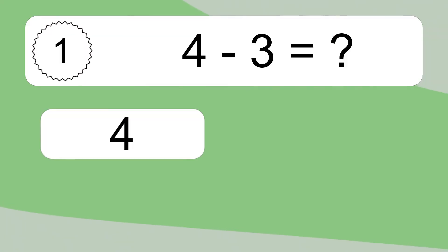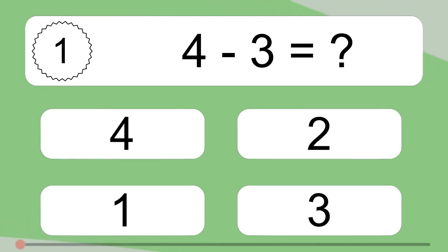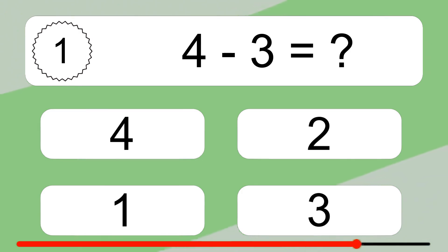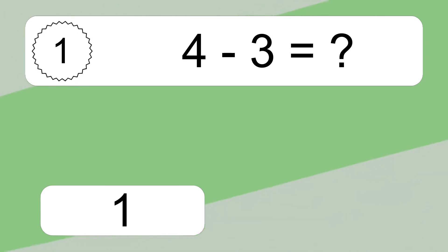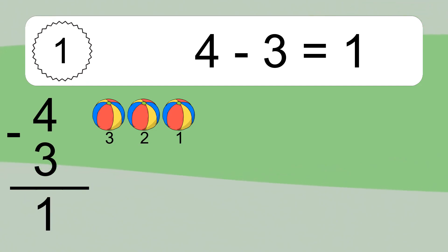4 minus 3 equals what? 4 minus 3 equals 1. Let's count it: 3, 2, 1.